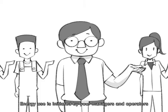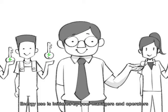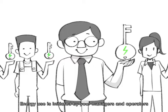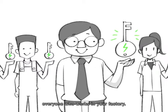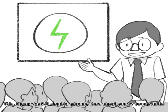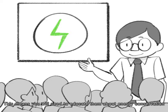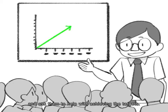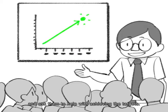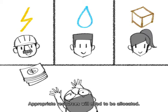Energy use is initiated by your managers and operators, everyone who works in your factory. This means you will need to educate them about energy conservation and ask them to help with achieving the targets. Appropriate resources will need to be allocated.